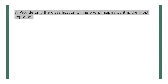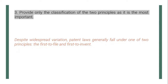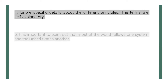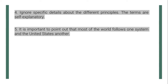Next, provide only the classification of the two principles as it is the most important — include only the major information presented in the text. For example: 'Despite widespread variation, patent laws generally fall under one of two principles: the first-to-file and first-to-invent.' Then, ignore specific details about the different principles since the terms are self-explanatory. If one piece of information already makes sense of the whole text, you may use only that and disregard other details that are already understandable from the main idea.